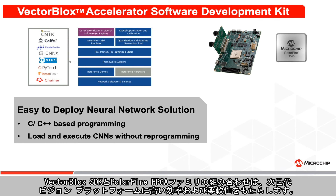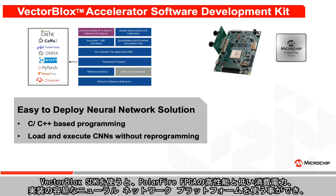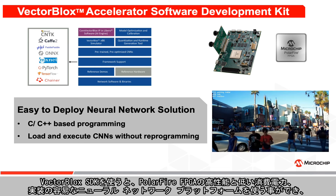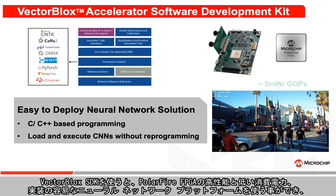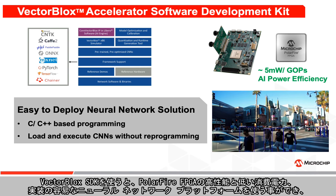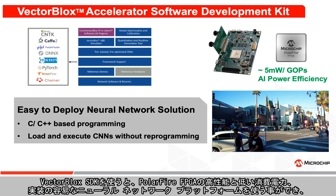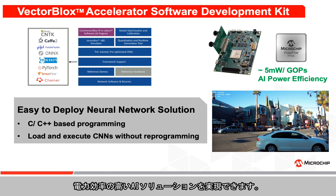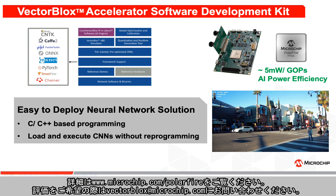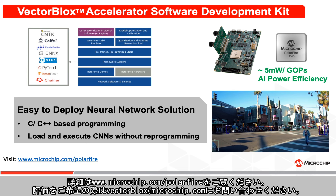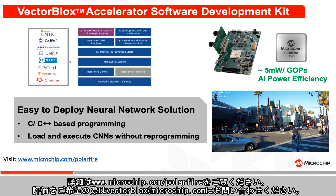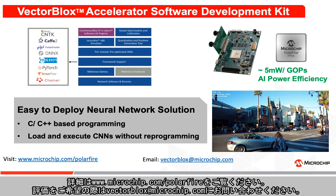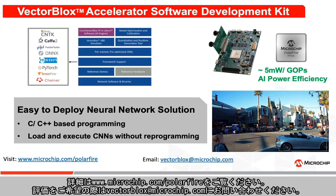The combination of the VectorBlocks SDK and PolarFire FPGA family offer efficiency and flexibility for your next generation vision platform. With VectorBlocks SDK, we combined the high performance features and low power capabilities of PolarFire FPGAs with an easy to deploy neural network platform, resulting in a highly power efficient AI solution. To learn more, visit our website at www.microchip.com/PolarFire or contact us at vectorblocks@microchip.com for an evaluation.